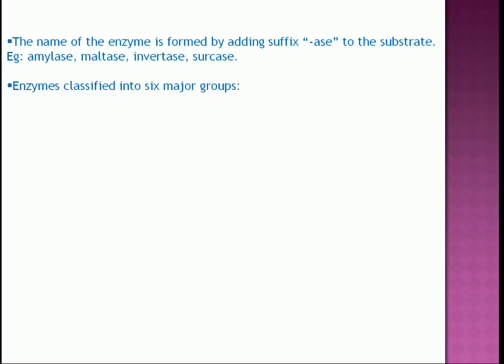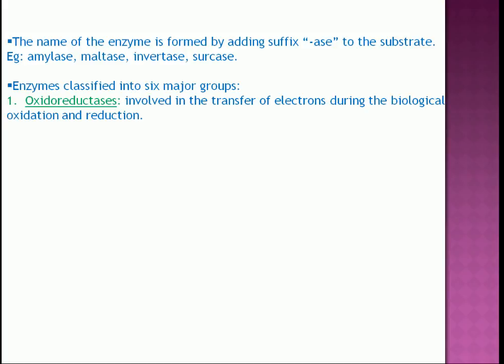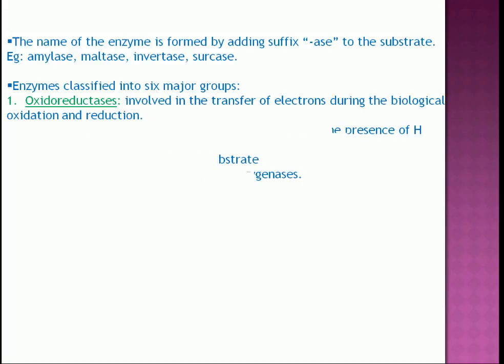Enzymes classified into six major groups. One, oxidoreductases, EC number one, involved in the transfer of electrons during biological oxidation and reduction. For example, dehydrogenases remove hydrogen from the substrate in the presence of hydrogen acceptor.